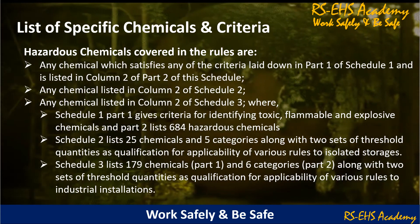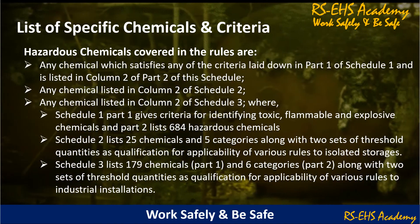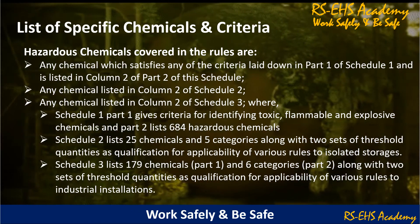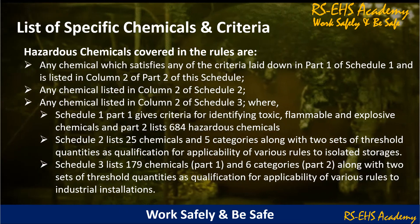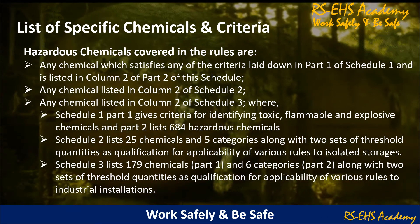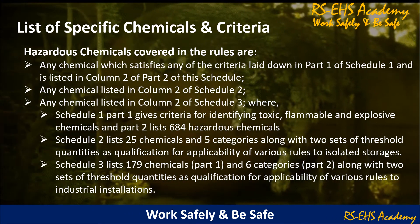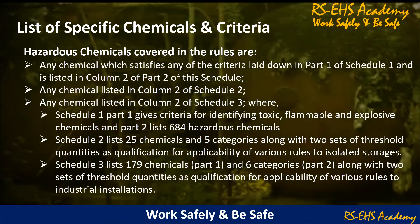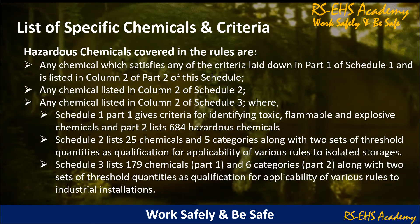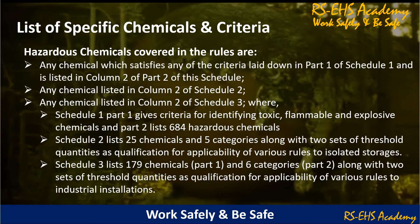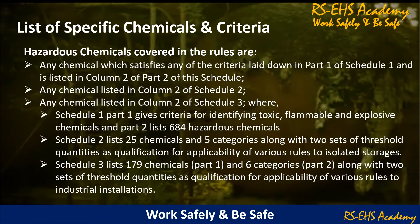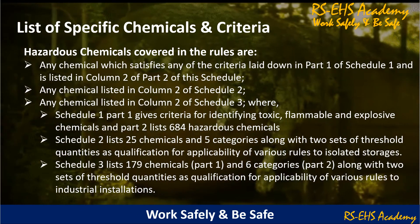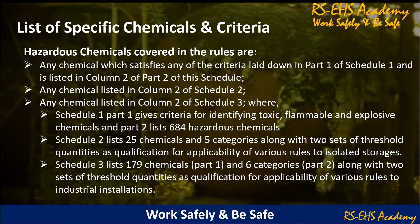List of Specific Chemicals and Criteria — Hazardous Chemicals covered in the rules: any chemical satisfying criteria laid down in Part 1 of Schedule 1 and listed in column 2 of Part 2 of this schedule; any chemical listed in column 2 of Schedule 2; and any chemical listed in column 2 of Schedule 3. Schedule 1 Part 1 gives criteria for identifying toxic, flammable and explosive chemicals, and Part 2 lists about 684 hazardous chemicals. Schedule 2 lists about 25 chemicals and 5 categories with 2 sets of threshold quantities for isolated storages. Schedule 3 lists about 179 chemicals in Part 1 and 6 categories with 2 sets of threshold quantities for industrial installations.